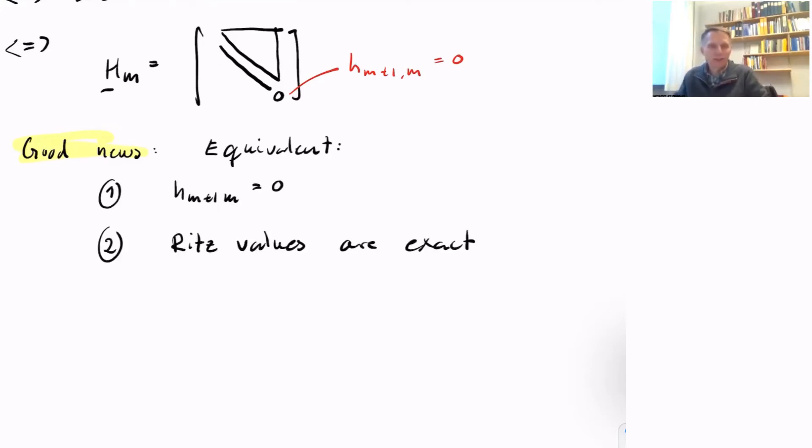Having breakdown may sound like a bad thing, but it turns out it's not as bad as it sounds. Having breakdown, so having this H_M+1,M equal to zero, is equivalent to having an optimal situation. We have a Ritz value which is exact.